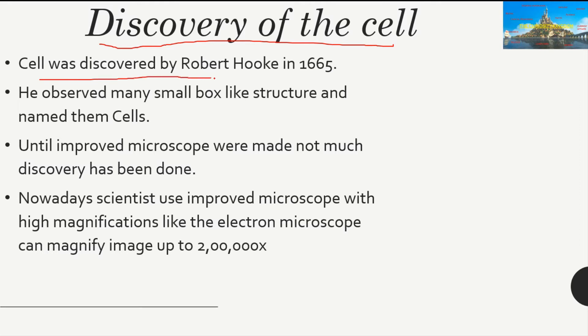The cell was discovered by Robert Hooke in 1665. What he did was take a piece of cork and observed it under a microscope. What he actually saw were dead cells of cork. This was the point when the cell was discovered. Not much detailed study was done afterward because there were no good microscopes, but when improved microscopes came, much more research was done.